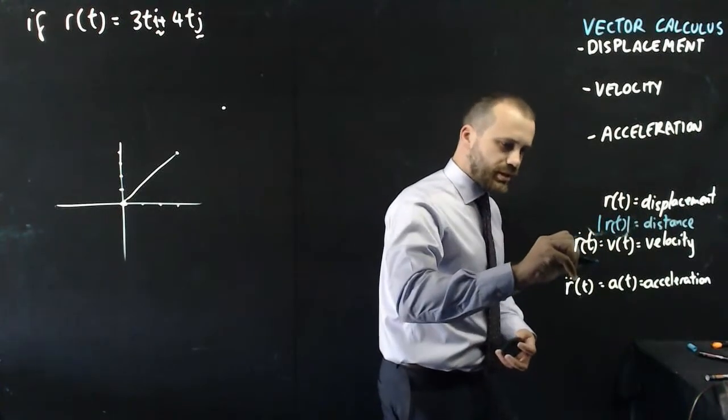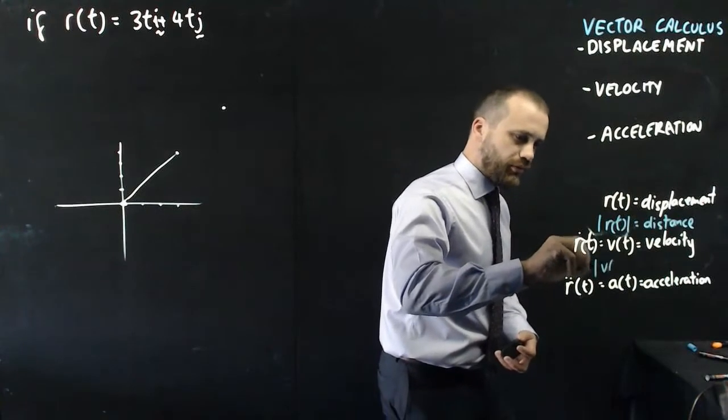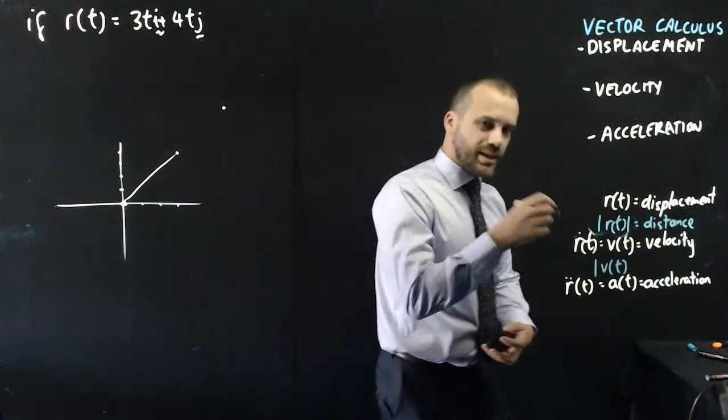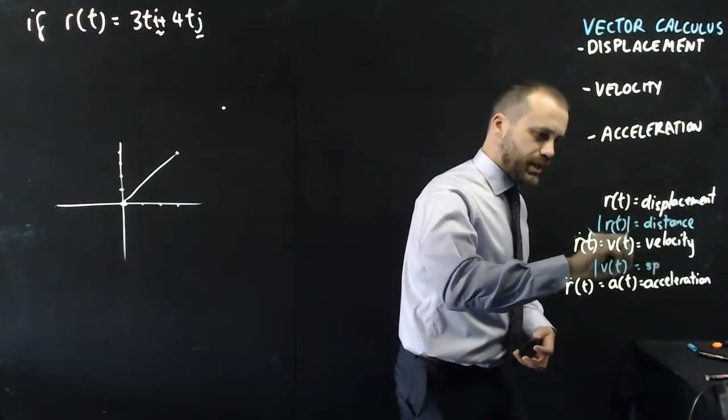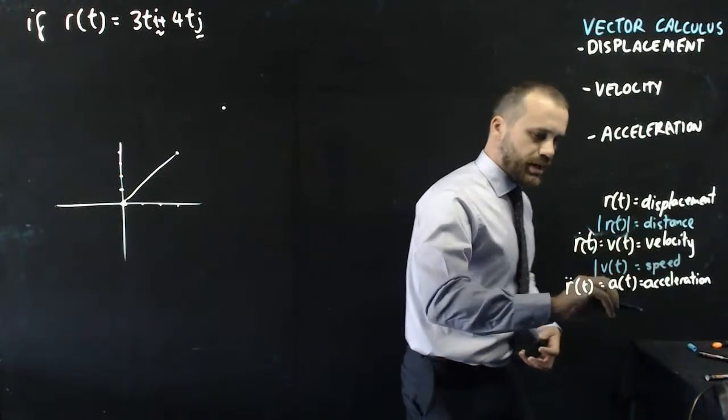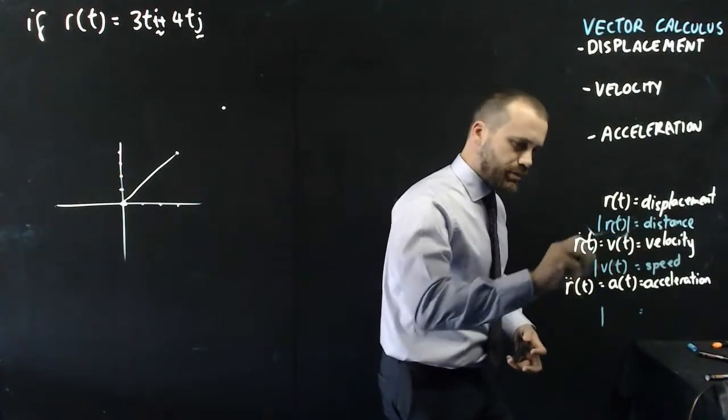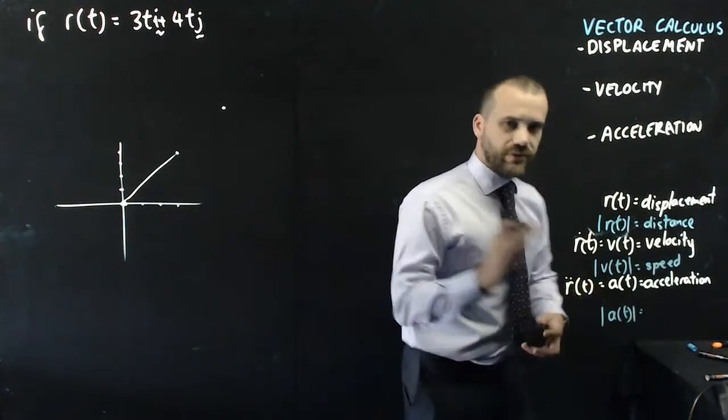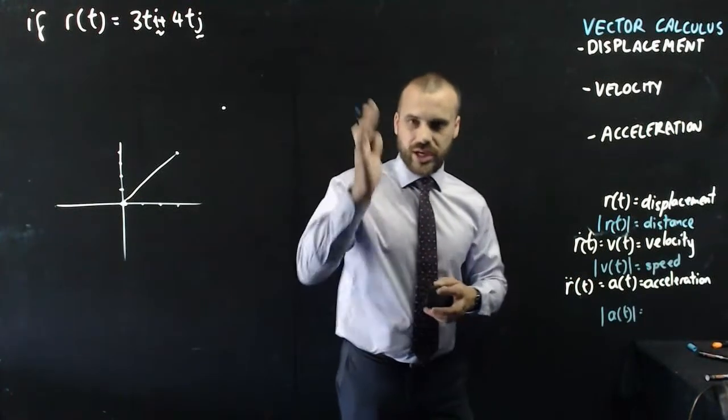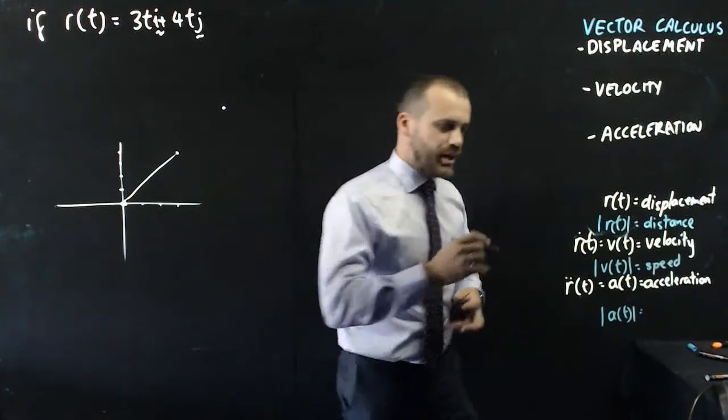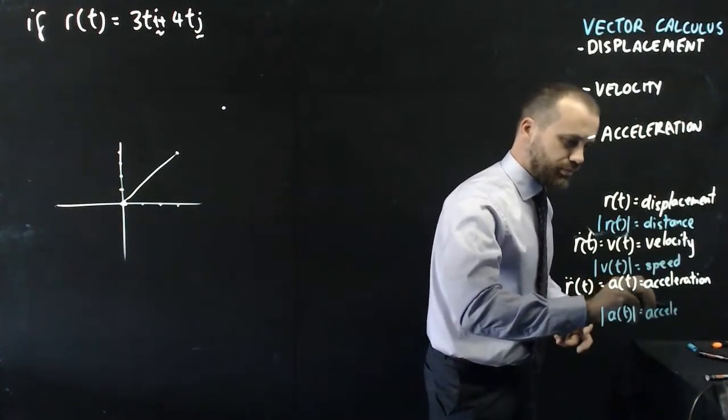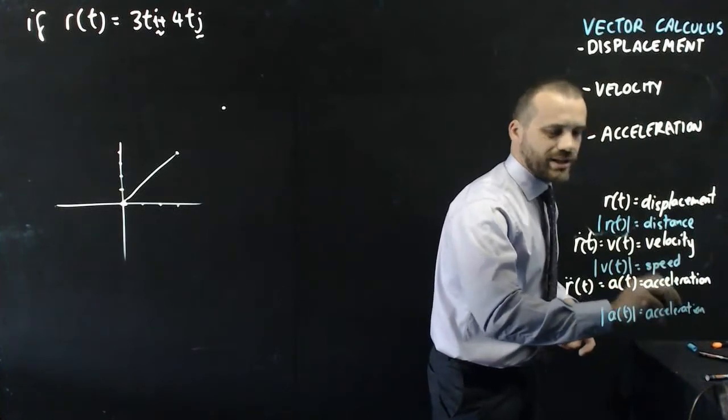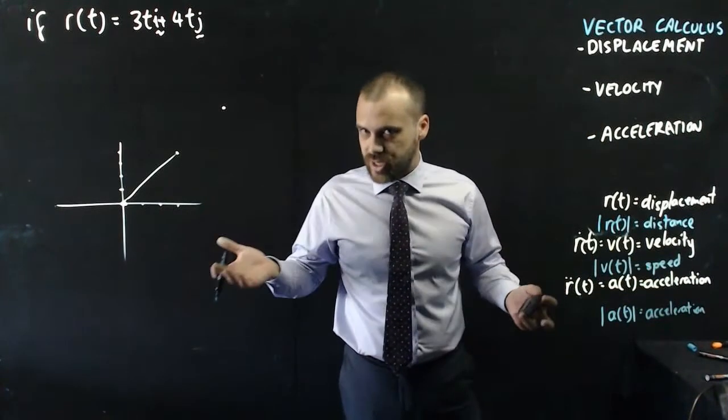So that is, the magnitude of r with respect to t is equal to the distance. And similar, we can say that the magnitude of v with respect to t, it isn't the velocity, it's the speed. And finally, the magnitude of our acceleration, instead of giving us our acceleration in its i and its j components, or maybe even its k components, it's just going to give us its actual acceleration, its straight line acceleration in meters per second per second.